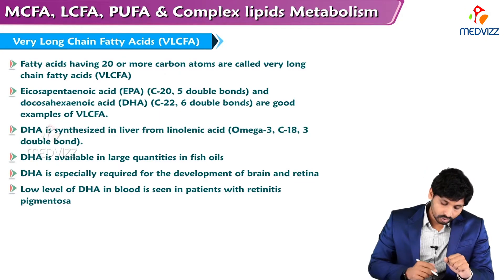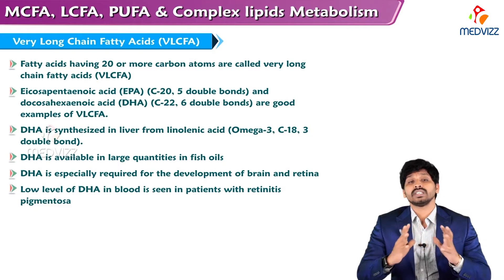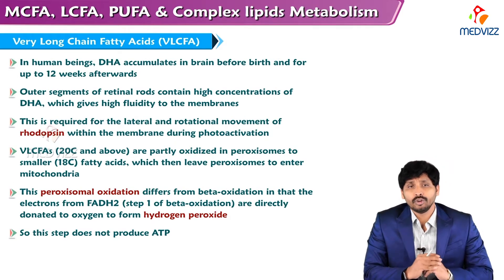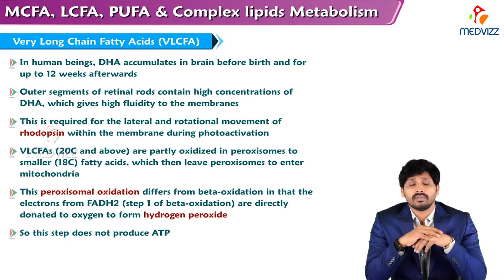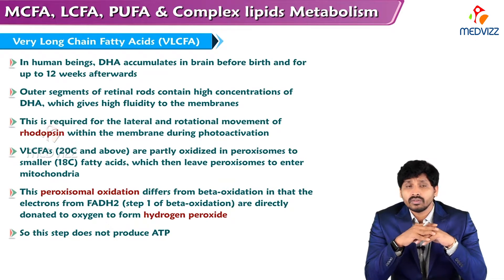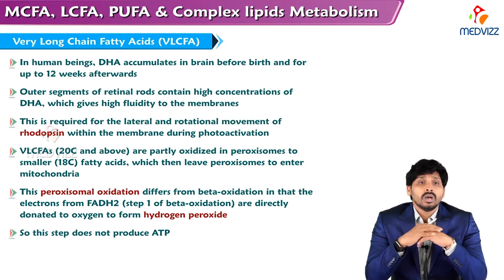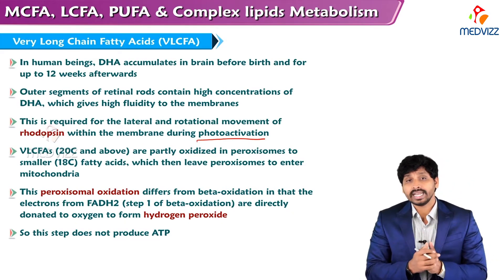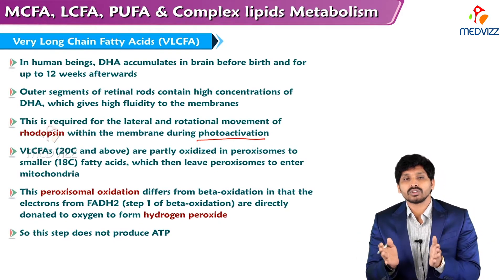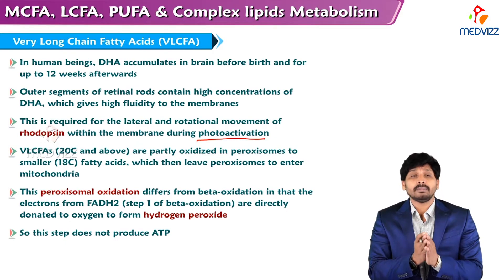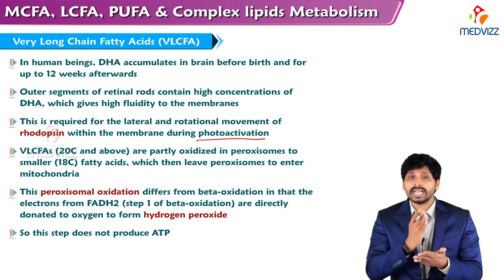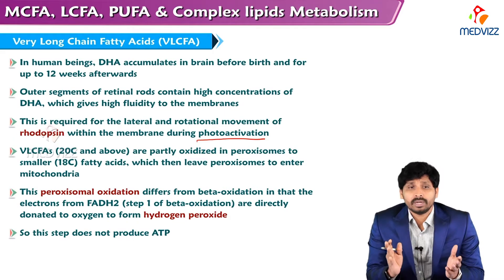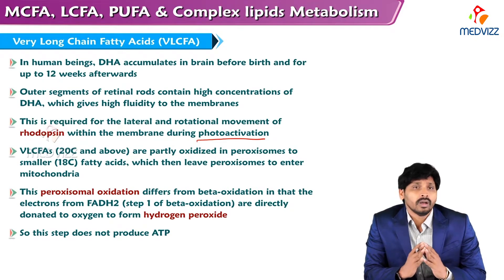Docosahexaenoic acid is especially required for the development of the brain and retina. Low levels of DHA in blood are seen in patients with retinitis pigmentosa. DHA accumulates in the brain before birth and for up to 12 weeks afterwards. The outer segments of retinal rods contain a high concentration of DHA, which gives high fluidity to the membranes and is required for the lateral and rotational movement of rhodopsin within the membrane during photoactivation. Very long chain fatty acids are partly oxidized in peroxisomes to smaller fatty acids, which then leave peroxisomes to enter mitochondria. If there is any defect in the peroxisomes, these very long chain fatty acids will start accumulating and cannot be further metabolized.